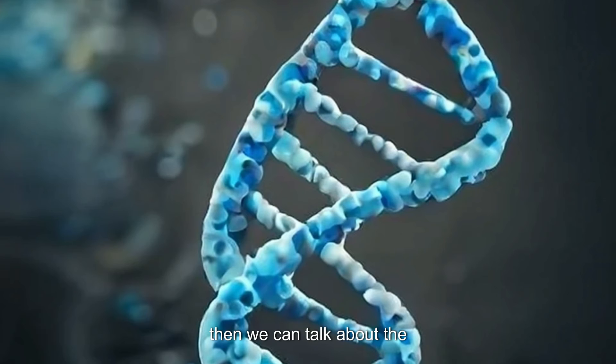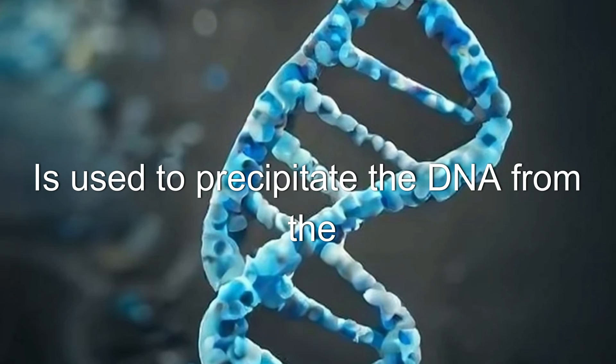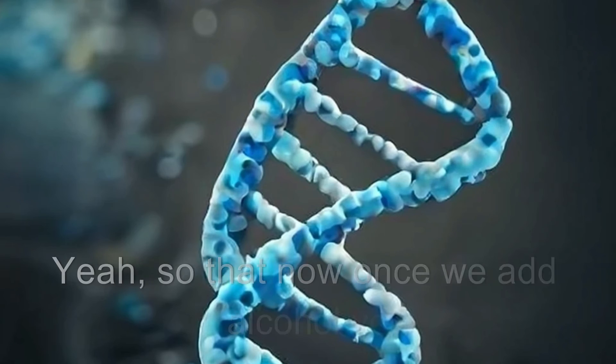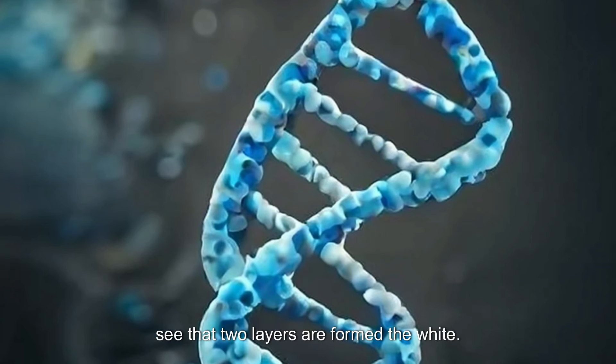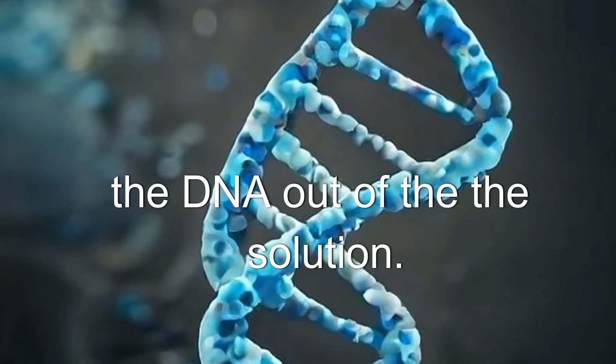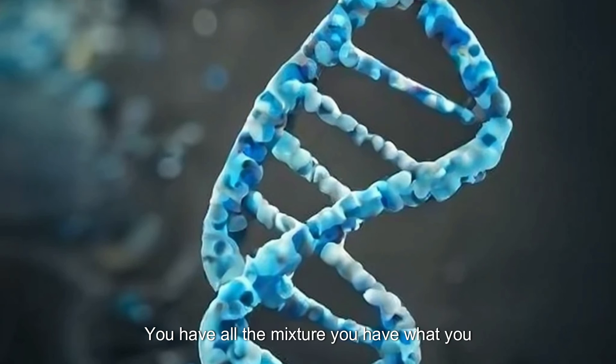Then we can talk about the alcohol. Alcohol is used to precipitate the DNA from the solution. So that now, once we add alcohol, you will see that two layers are formed. The white mist or white cotton-like mass will be formed on top of the beaker. If you are using a beaker, if you are using a glass, whatever you are using, you will be able to see those two layers. But after adding alcohol, alcohol is very important in precipitating the DNA out of the solution or the mixture you have prepared.